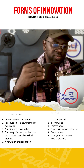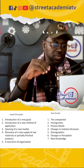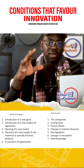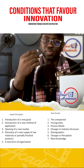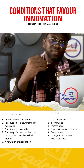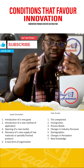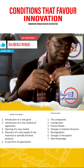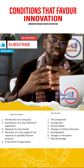There are conditions that favor innovation, and two economists speak about this topic. The first person being Joseph Schumpeter, who came up with five conditions that favor innovation. Schumpeter's first point was that if there's a new good, it generates or creates an enabling environment for innovation.